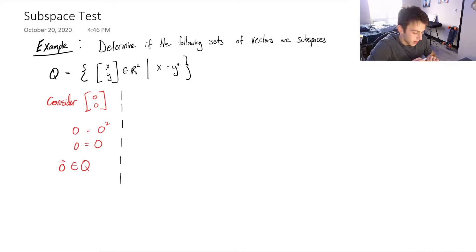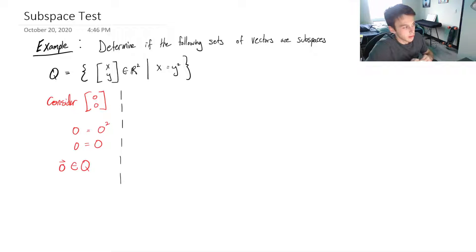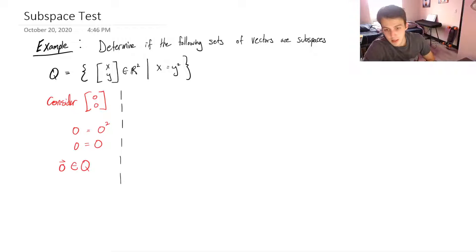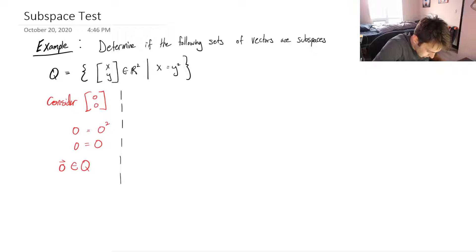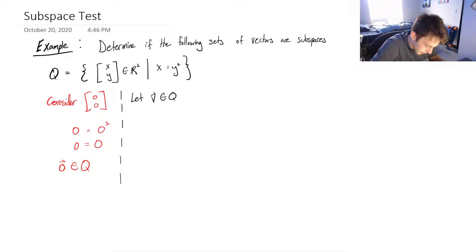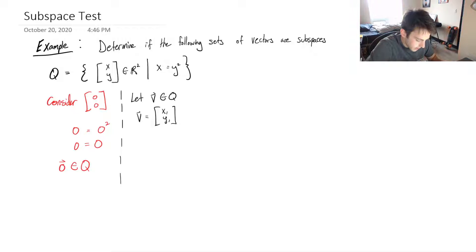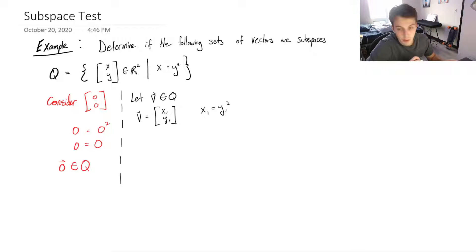Another property of the subspace test we're going to check is whether Q is closed under scalar multiplication. This means: if I take a vector that's in Q and multiply it by some scalar, is the resulting vector also going to be in Q? Let v be in Q, and say v equals (x₁, y₁). Since v is in Q, we know that x₁ equals y₁ squared.